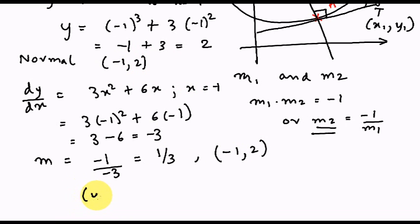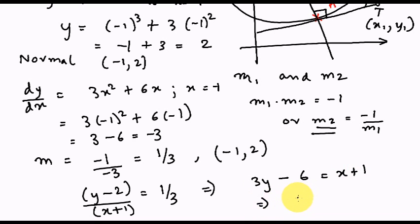So, if I apply the equation y minus 2 divided by x plus 1 is equal to 1 over 3, I can simplify this to get the equation of the normal. Simplifying this, I get 3y minus 6 is equal to x plus 1. Just cleaning it up to make it look good. 3y, this minus 6 goes over to the other side, is equal to x plus 7. So, what we have over here, finally, this equation is the equation of the normal.